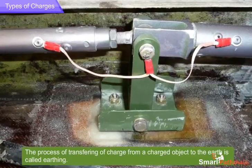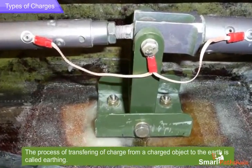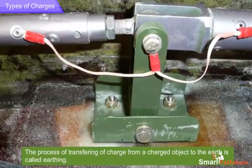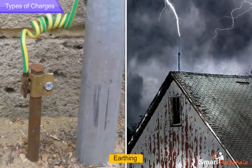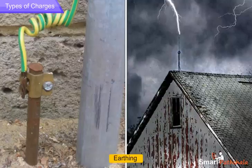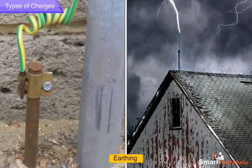The process of transferring charge from a charged object to the earth is called earthing. Thus, earthing is provided in buildings to protect us from electric shocks due to any leakage of electric current.